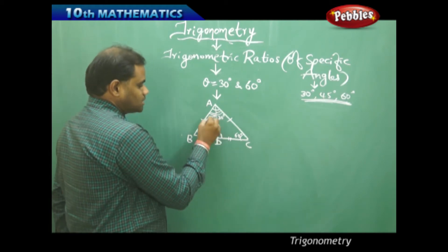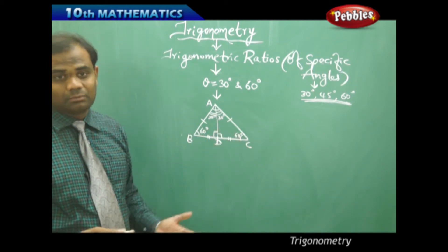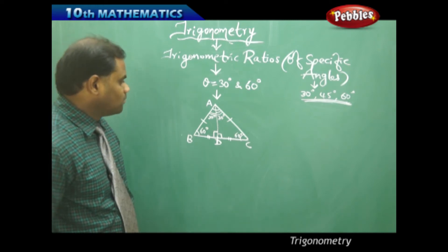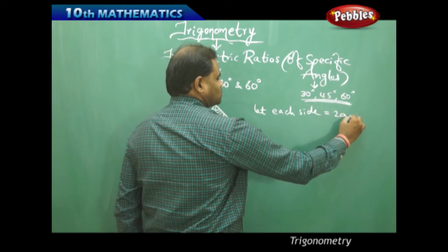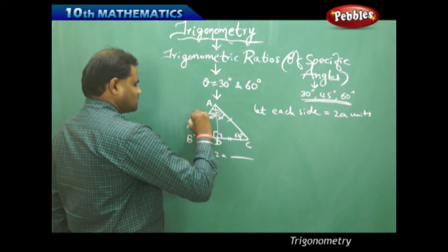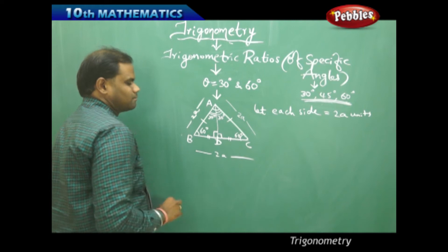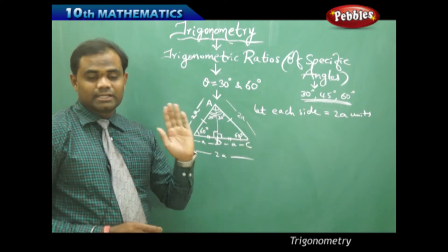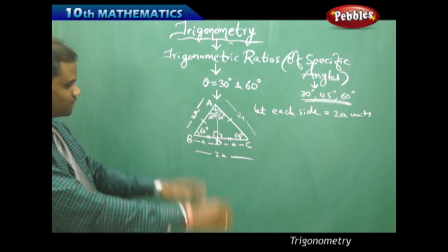Using the property that AD is the angular bisector giving an angle of 30°, we split the triangle into two right-angle triangles to find the trigonometric ratios for 30° and 60°. Let each side of the equilateral triangle equal 2A units, so AB = BC = CA = 2A. Since D is the midpoint of BC, each half BD = DC = A.